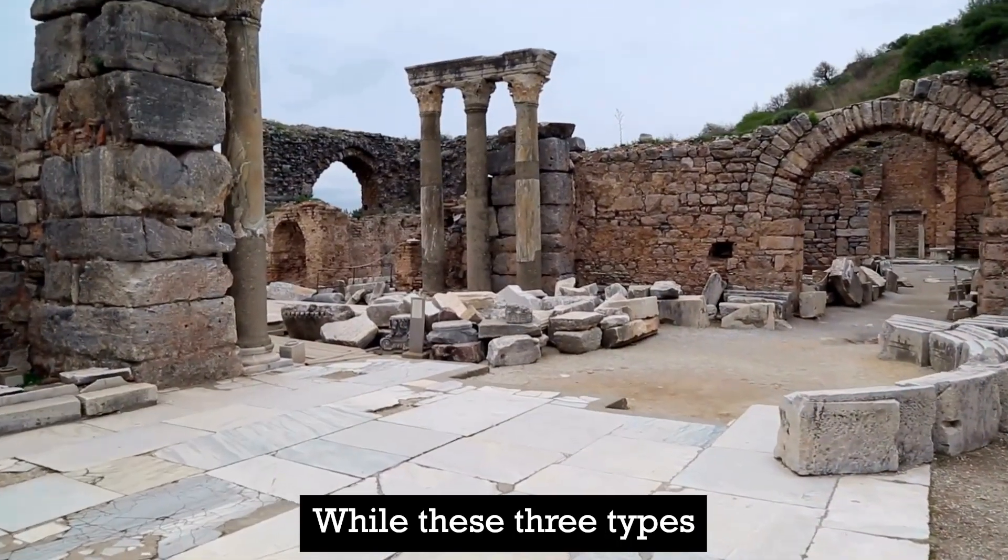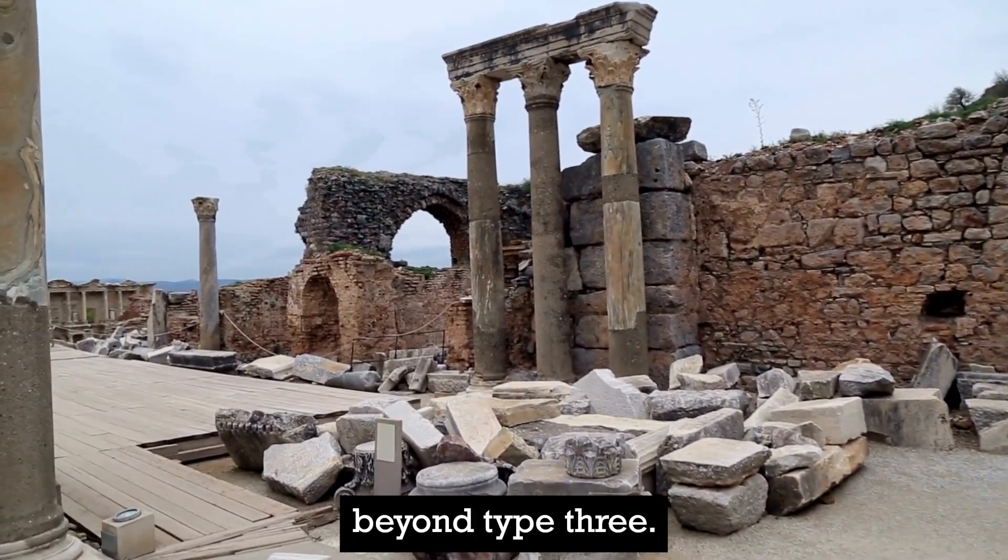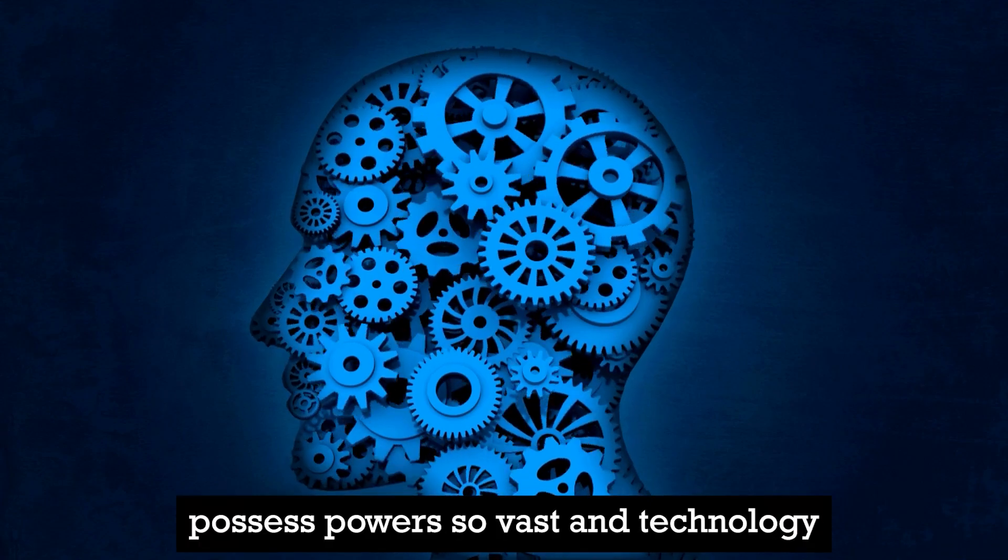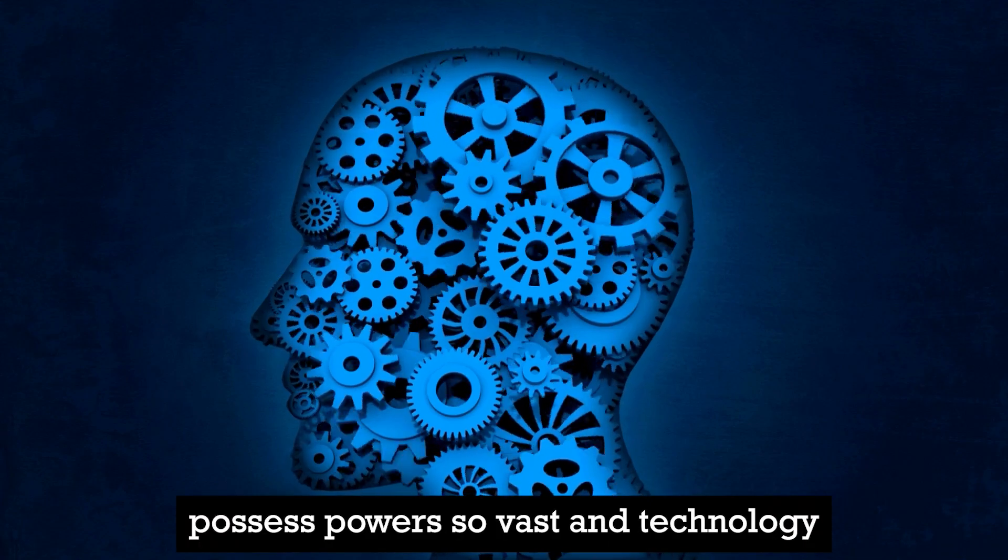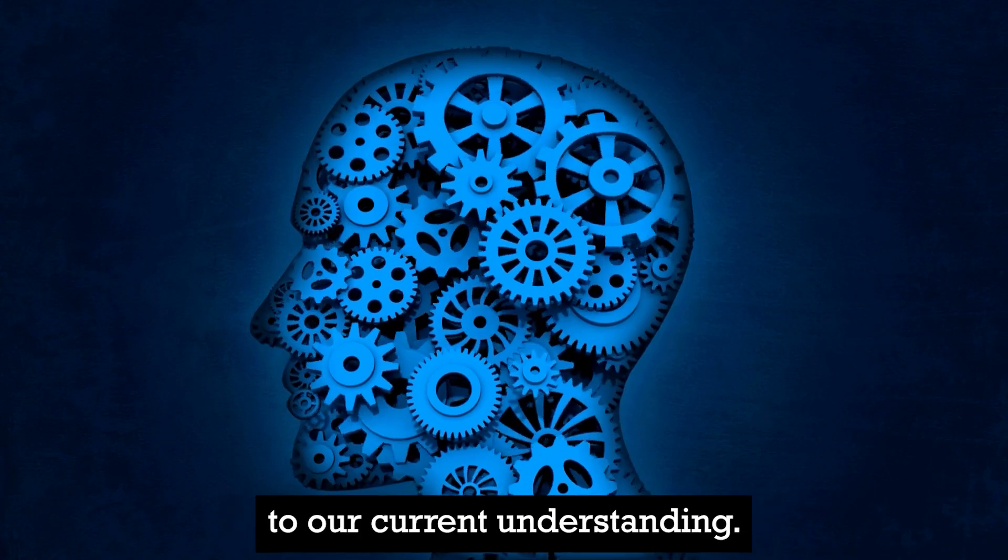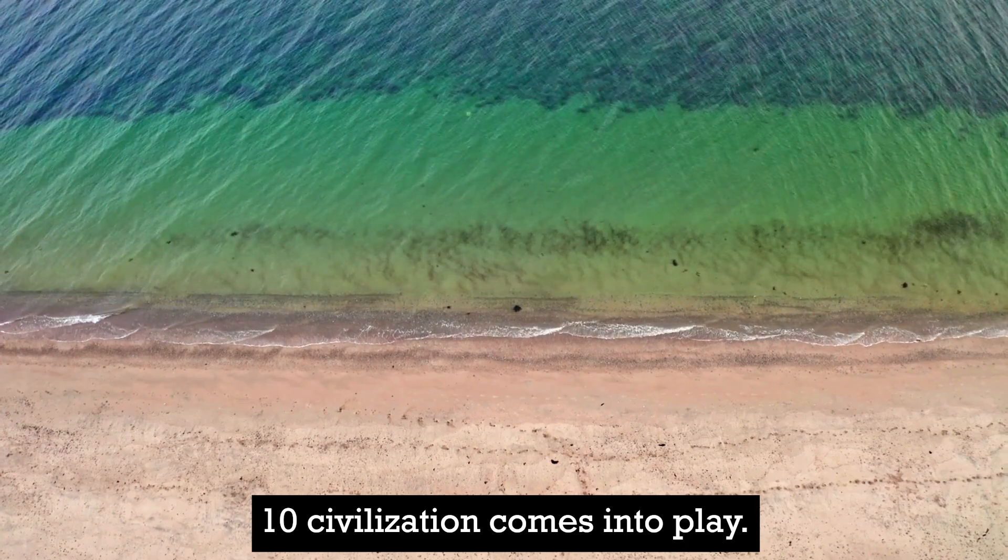While these three types are the core of the Kardashev scale, over time, theorists have extended the scale beyond Type 3. These hypothetical civilizations possess powers so vast and technologies so advanced, they're almost incomprehensible to our current understanding. And that's where our enigmatic Type 10 civilization comes into play.